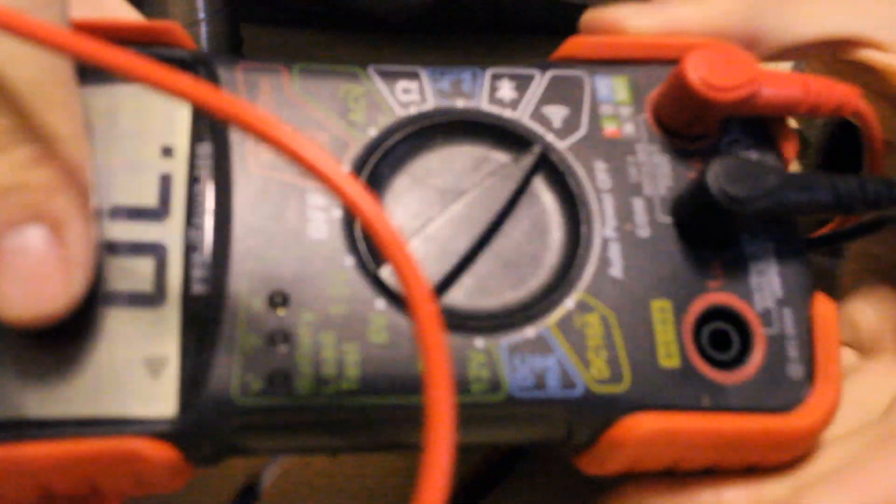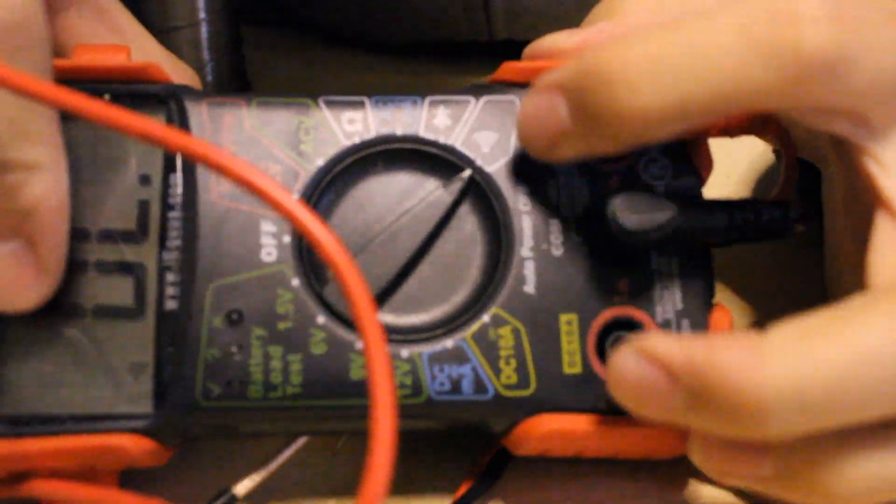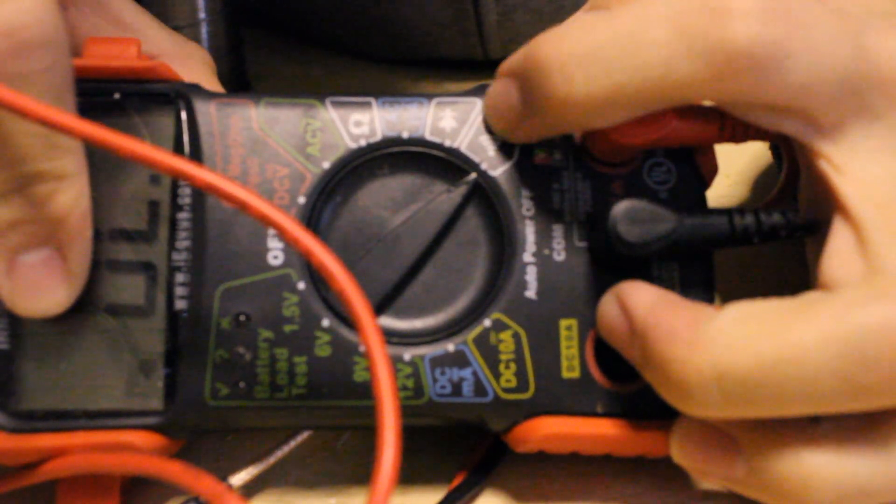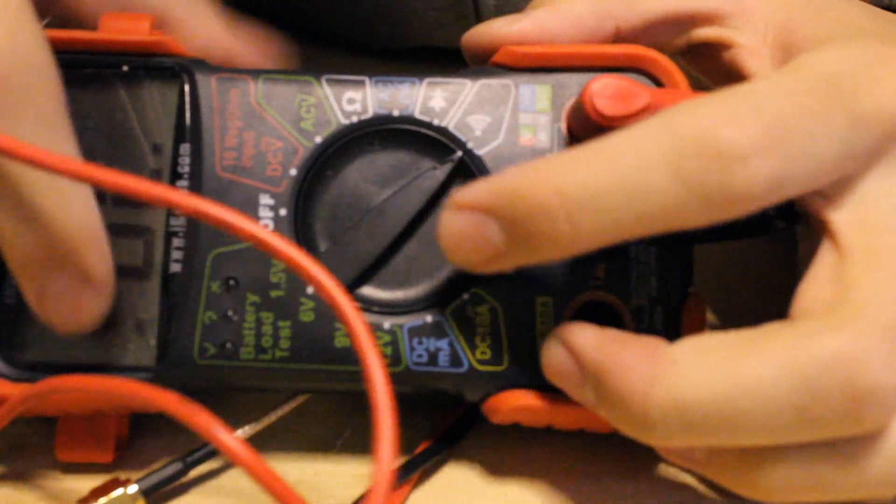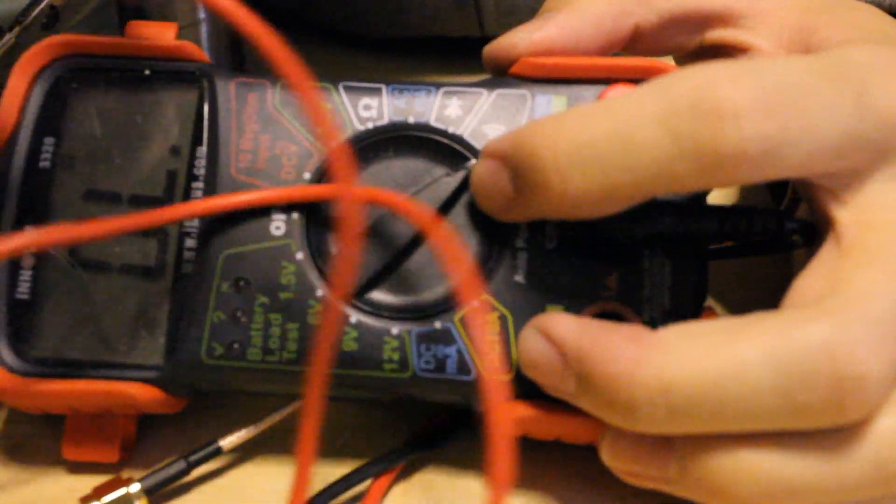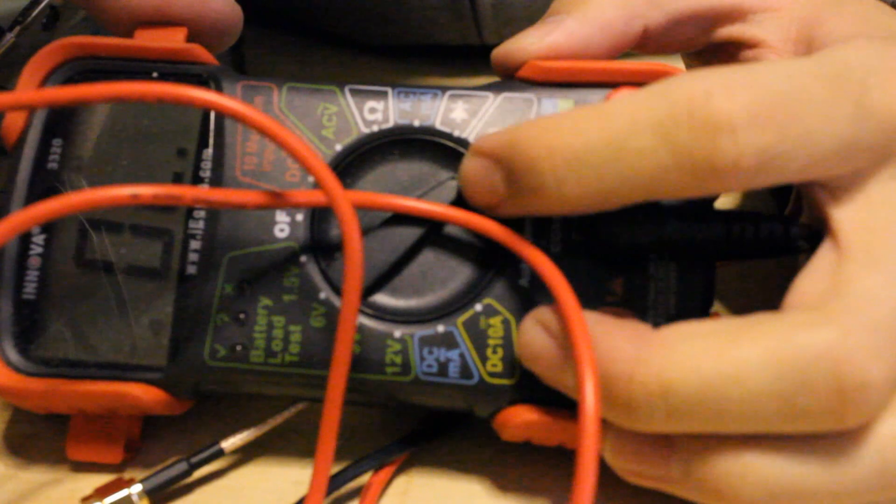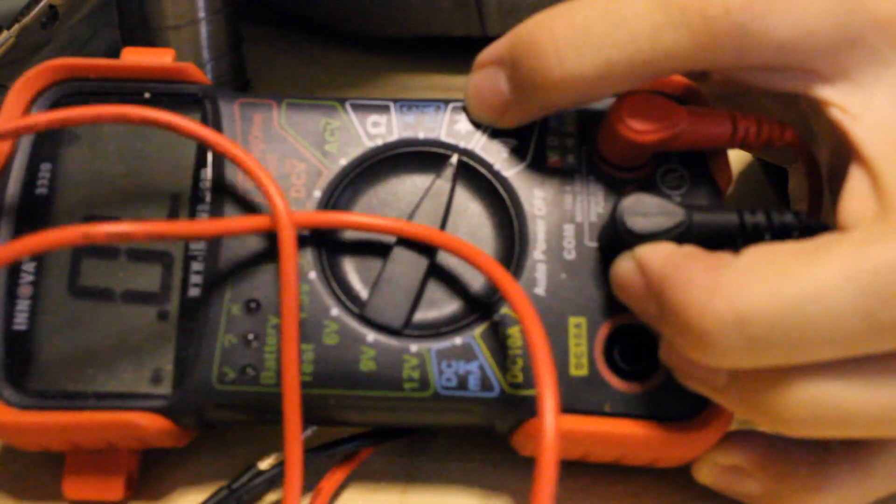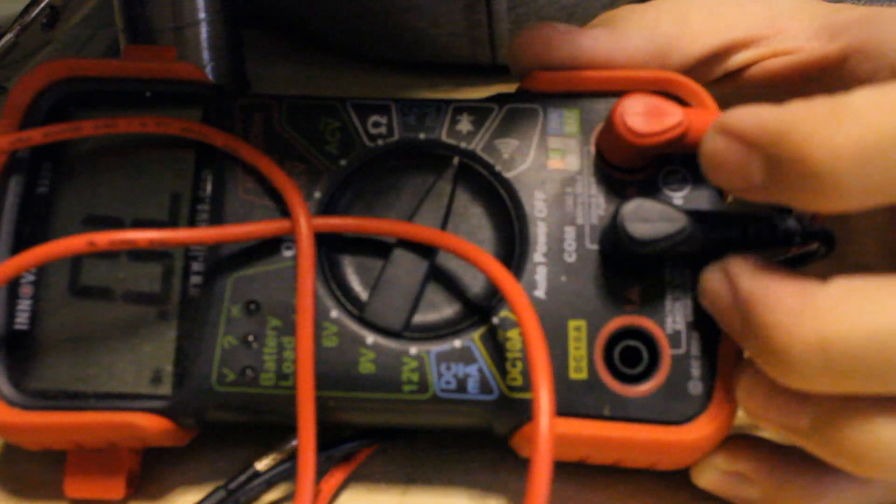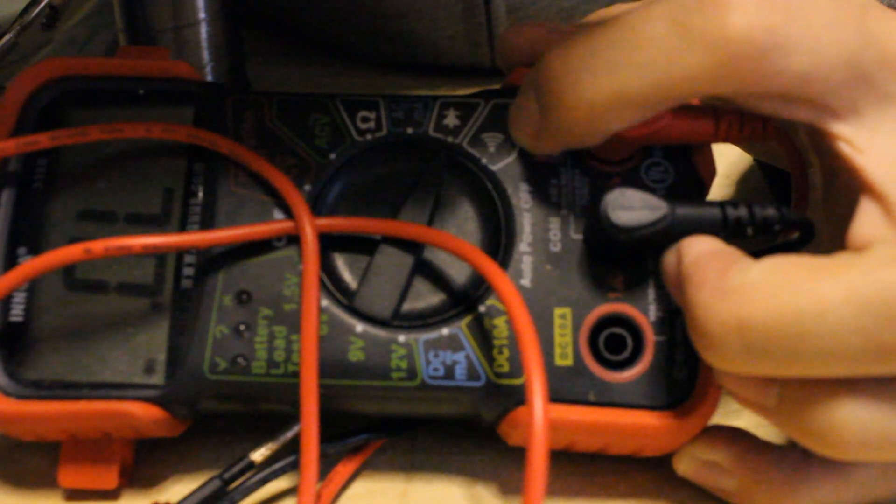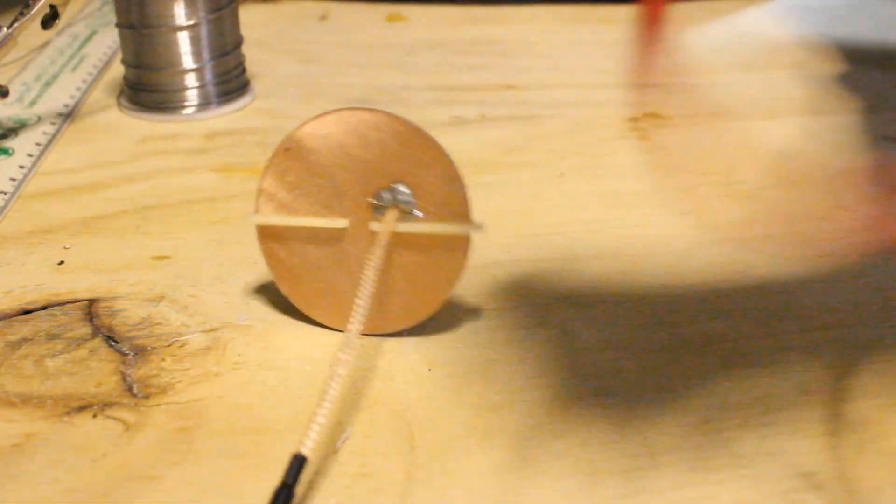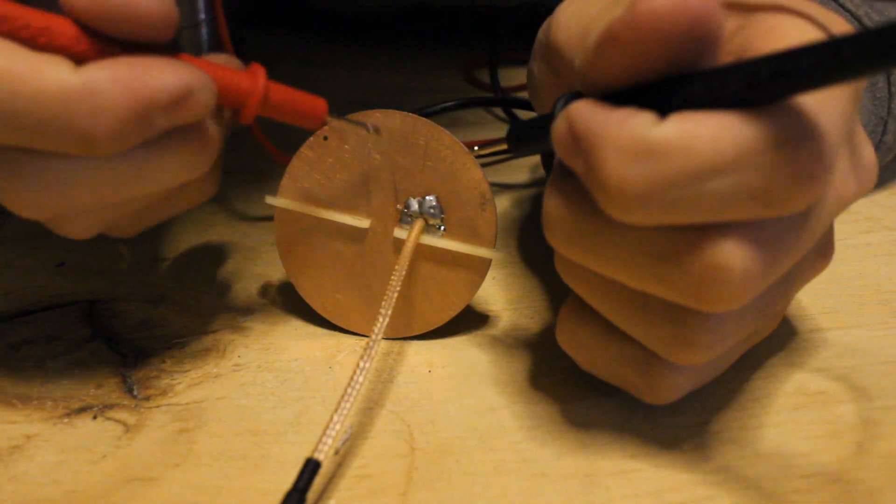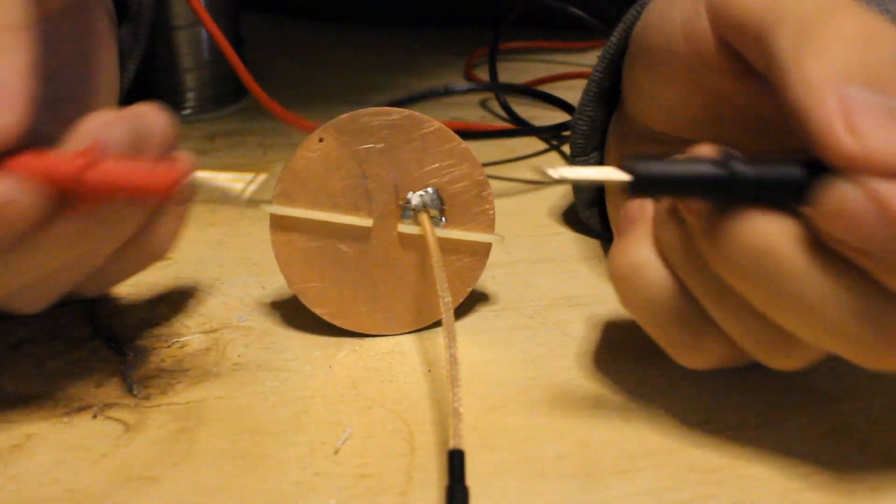You want to go to this mode right here, the one with the kind of, it looks like a sound wave going out, and it does beep so I guess that's the whole sound wave thing. Or you want to go to the diode test, one of those, and it'll pretty much give you a reading if you're having continuity. Okay, let me just show you what I mean.